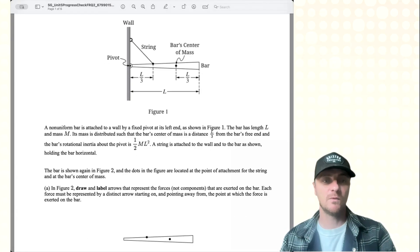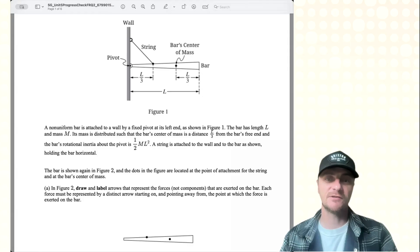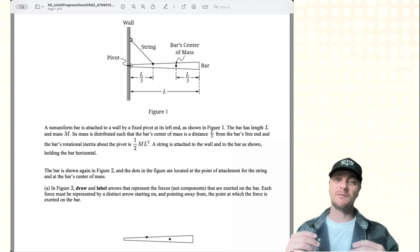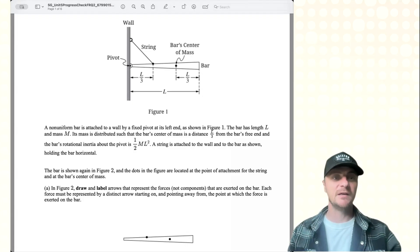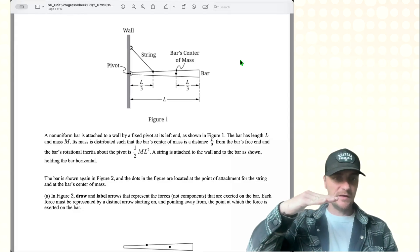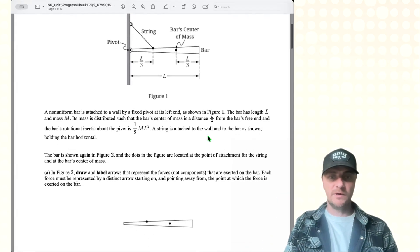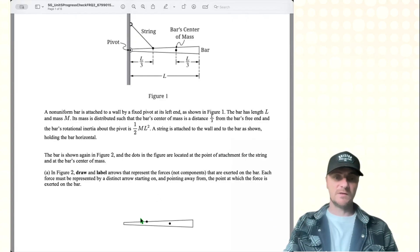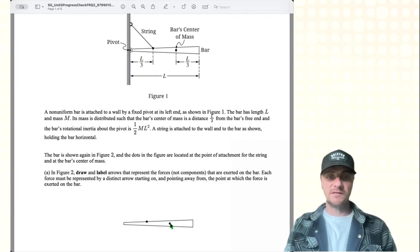A non-uniform bar is attached to a wall by a fixed pivot at its left end as shown in Figure 1. The bar has length L and mass M. Its mass is distributed such that the bar's center of mass is a distance L divided by 3 from the bar's free end and the bar's rotational inertia about the pivot is 1/2 mL squared. The string is attached to the wall and the bar as shown, holding the bar horizontal. The bar is shown again in Figure 2 and the dots in the figure are located at the point of attachment for the string and the bar's center of mass. So this is where the string is attached and this is the center of mass.